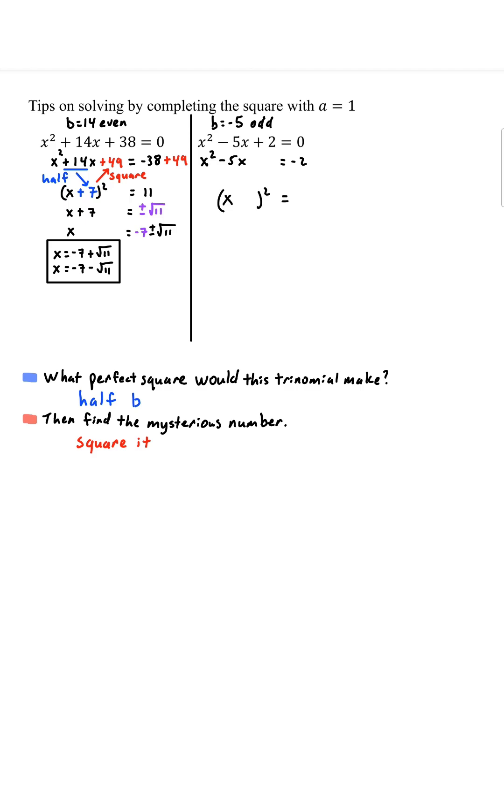Now let's think, what perfect square would this trinomial make? So half of negative 5, negative 5 over 2. And then we'll square it. 5 squared, 25. 2 squared, 4. So negative 5 quantity squared is 25 over 4. Add to both sides.